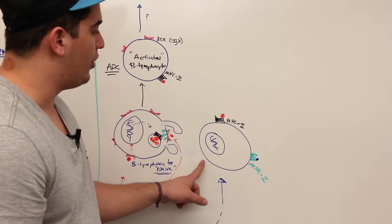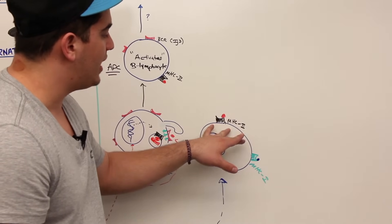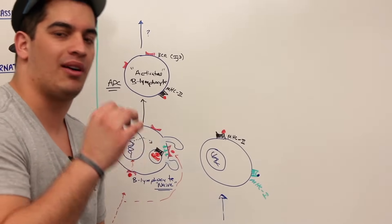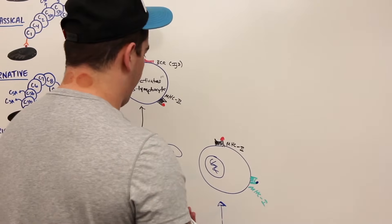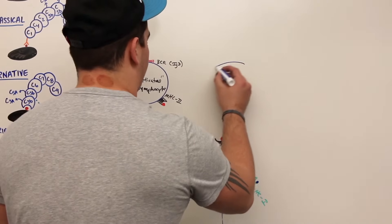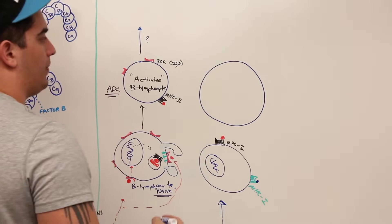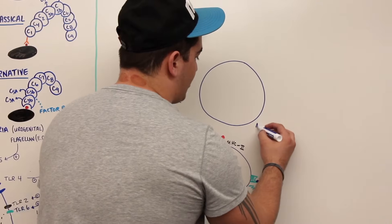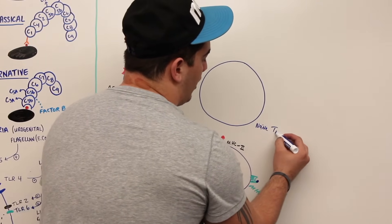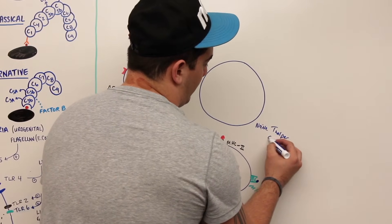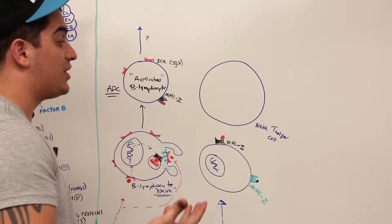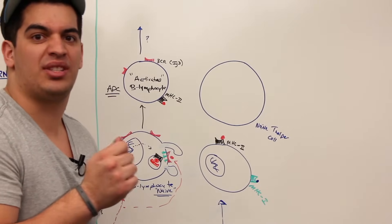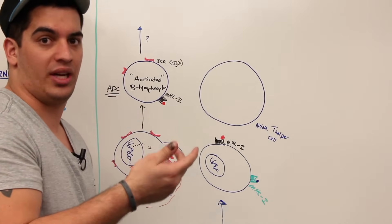This macrophage comes and presents its MHC2 molecule and the foreign antigen to a specific type of T cell — a naive T helper cell. What does naive mean? It means it has receptors that can respond to these molecules, but it's not activated yet. It's not specific — it doesn't know exactly what it's going to differentiate into.